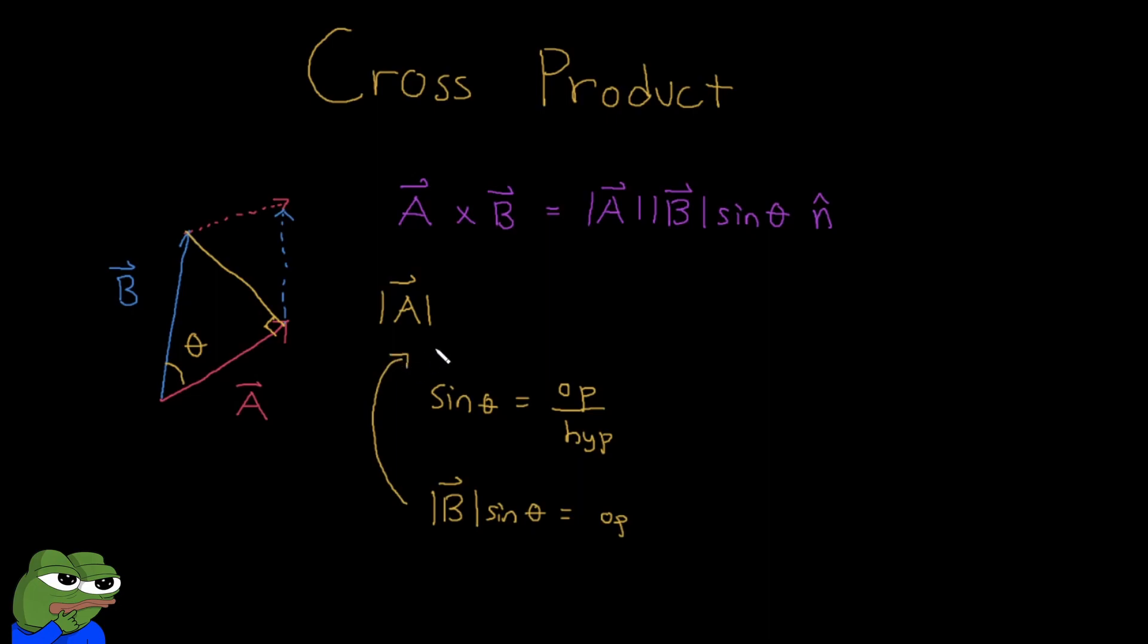And so we can put this over here and see that the area of our parallelogram is exactly the cross product, which is A B sine theta. And that's where the magnitude comes from. So that's where the magnitude came from. But how about the direction?